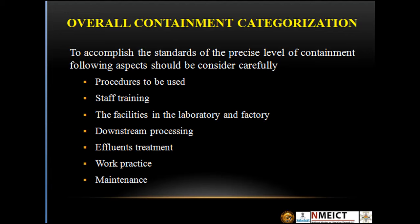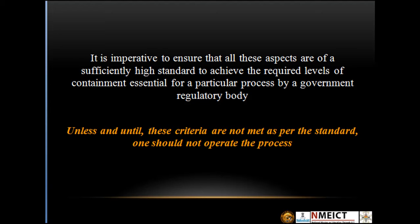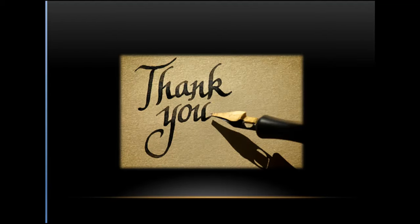Overall contaminant categorization to accomplish the required level of containment includes: procedures to be used, staff training, the facility in the laboratory and factory, downstream processing, effluent treatment, work practice, and maintenance. It is imperative to ensure that all these aspects meet a sufficiently high standard to achieve the required level of containment as mandated by a government regulatory body. Unless and until these criteria are met per the standard, one should not operate the process.